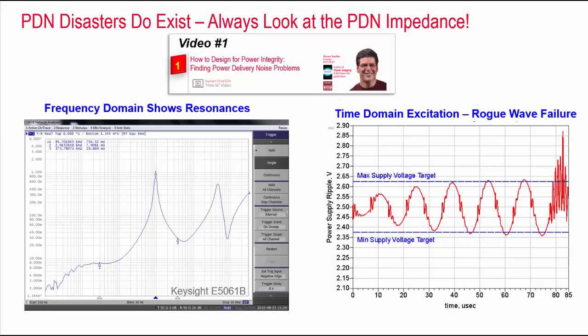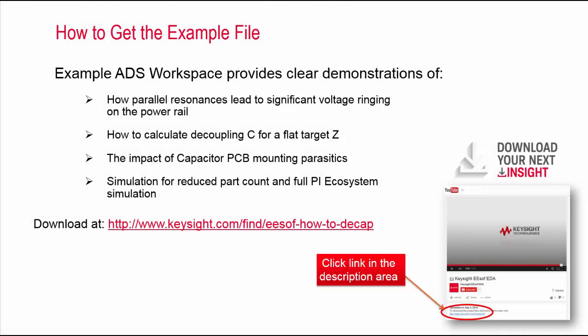Remember, this could happen to you if you don't look at the PDN impedance and optimize the decoupling capacitors — these multiple resonances combine into voltage rogue waves, as I shared in the first video of the series. In this video, I showed you how parallel resonances lead to significant voltage ringing on the power rail, how to calculate the decoupling capacitance for your circuit board, and how to minimize the impact of circuit board parasitics. Finally, I showed you how to use an automated optimizer to meet the target impedance requirement using the minimum number of decoupling capacitors. You can download my workspace by clicking the link in the description or by typing in the URL.